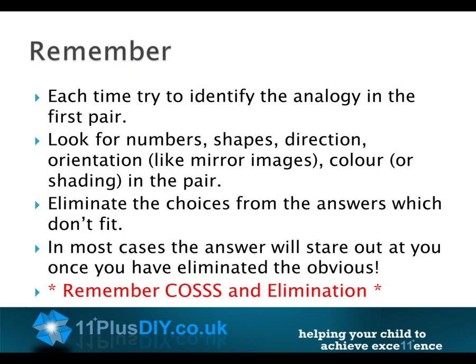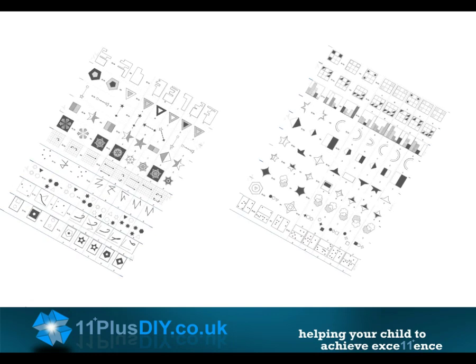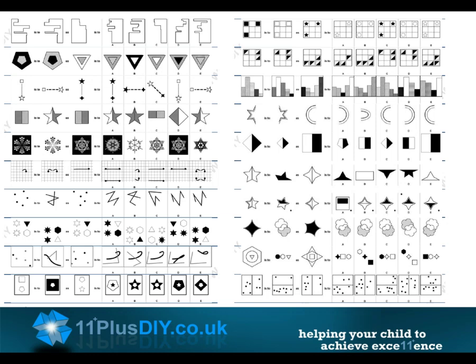Remember: each time, try to identify the analogy in the first pair. Look for numbers, shapes, direction, orientation like mirror images, colour, or shading in the pair. Eliminate the choices from the answers which don't fit. In most cases the answer will stand out once you have eliminated the obvious. Remember COS and elimination. For analogies there are many variants — you need to practice working with as many variants as possible to be successful.